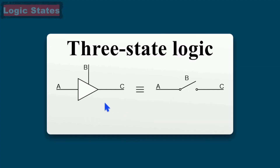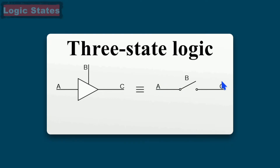We can understand this with a tri-state buffer. B is the control logic, A is the input, and C is the output. We can imagine B as a switch acting as a control signal. If this control signal is not enabled or the switch is open, it will not pass input A to output C. When B is closed and input is high, the same logic high state will appear at C. And when input A is at logic low state, output C will be at logic low as well.